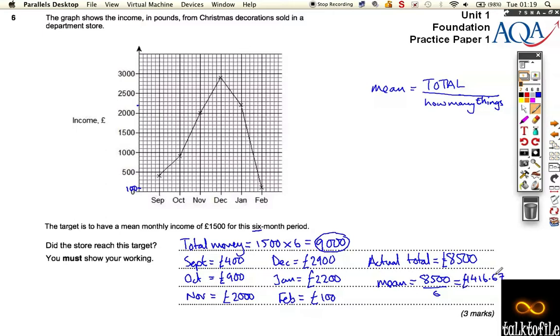Once you round it up, it's actually £1,416.666, I think. So, it's actually £1,416.67. So, they actually made £1,416.67 every month, and they wanted to make £1,500 every month. So, they didn't make it.